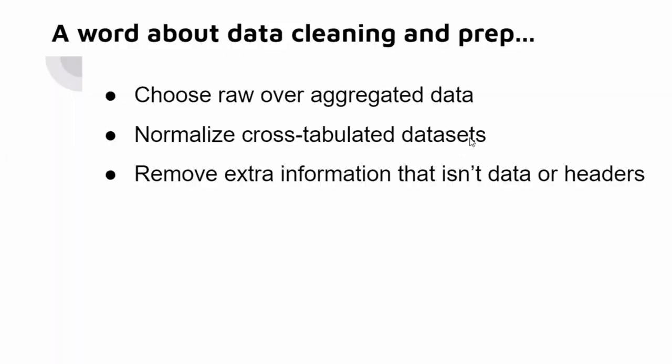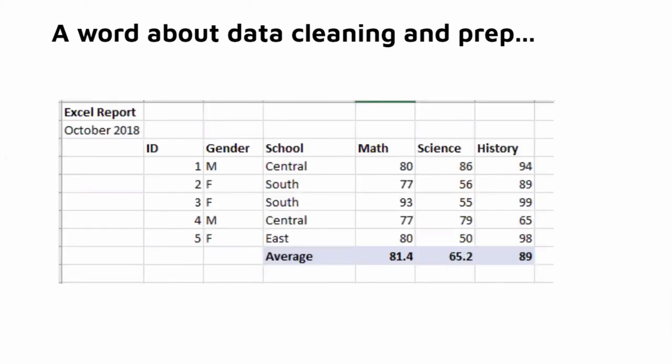So before we begin messing with the data and building specific graphs, it's important to clean your data. So we need raw data. It needs to be normalized and all of the extra information that isn't data or headers needs to be removed. So what does that mean? We're used to looking at the data from the Excel standpoint where we kind of need to separate things in a specific way and then calculate our averages. We are doing all of these things manually. Tableau works a bit different. So in order to convert this data to a Tableau cleaned data, we first need to remove the header that says Excel reports October 2018. This is useless information for Tableau. And we need to remove all of the calculations because Tableau will perform those calculations for you automatically in the background without the need for you to even do anything.